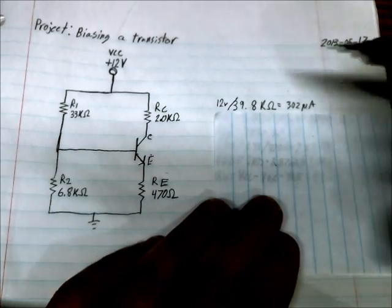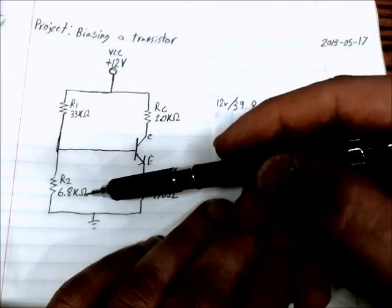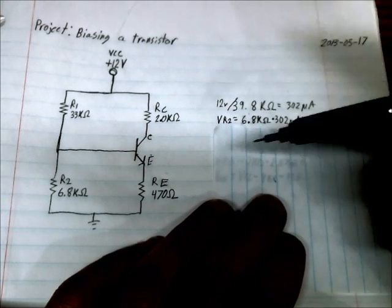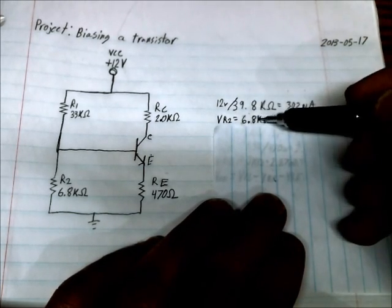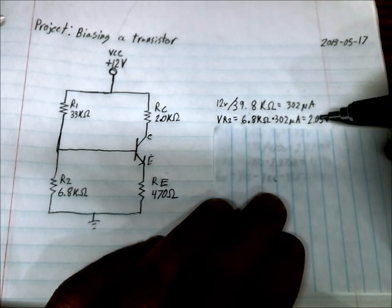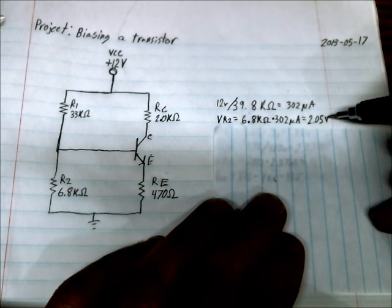And then you take that current and multiply it by the resistance to find the voltage across R2. So the voltage across R2 is equal to the resistance times the current and the final result is 2.05 volts.